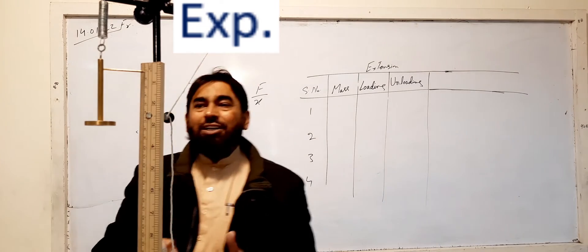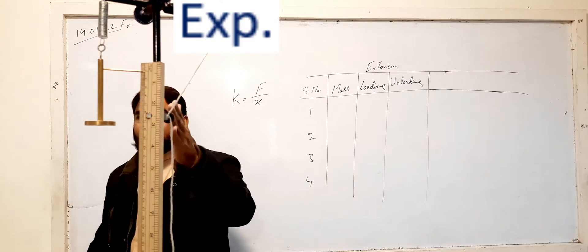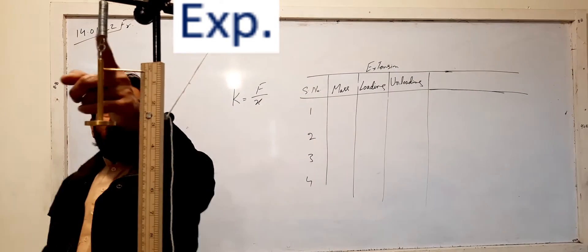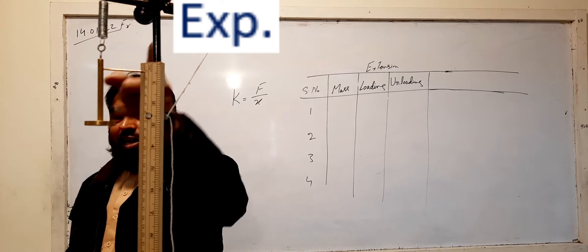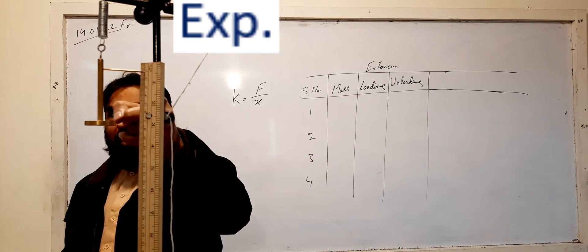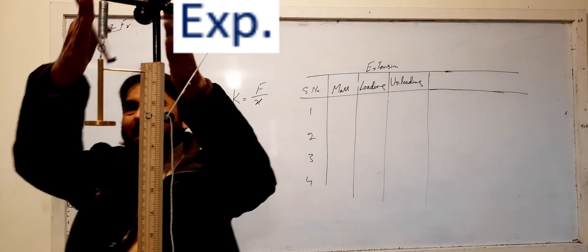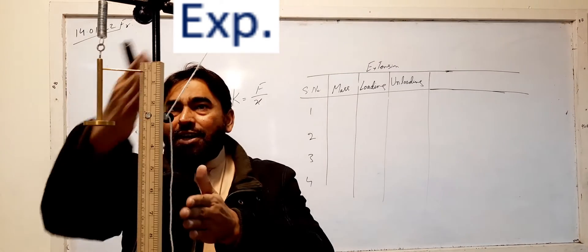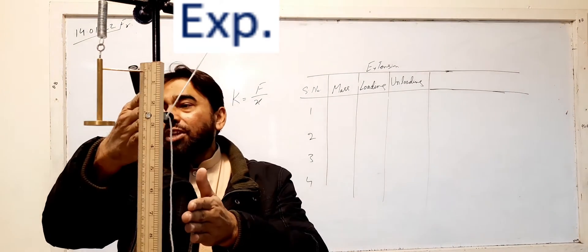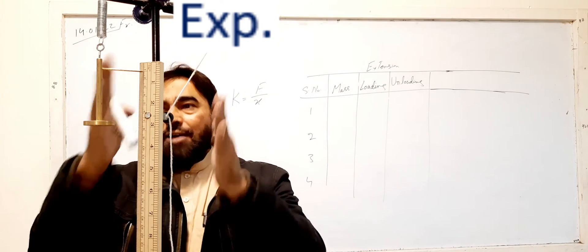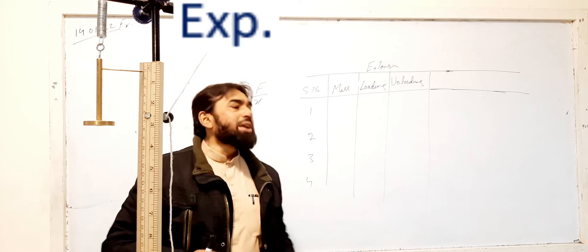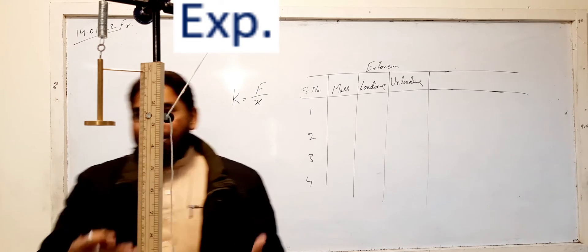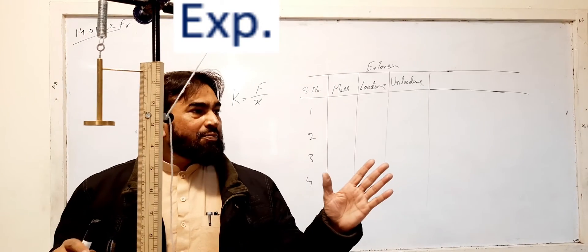The main precaution is that the stand must be vertical. You will have to verify this with a spirit level. Also, the helical spring and the stand bar must be parallel to each other — this is very important. You must take care that they remain parallel throughout the experiment after setting them up.